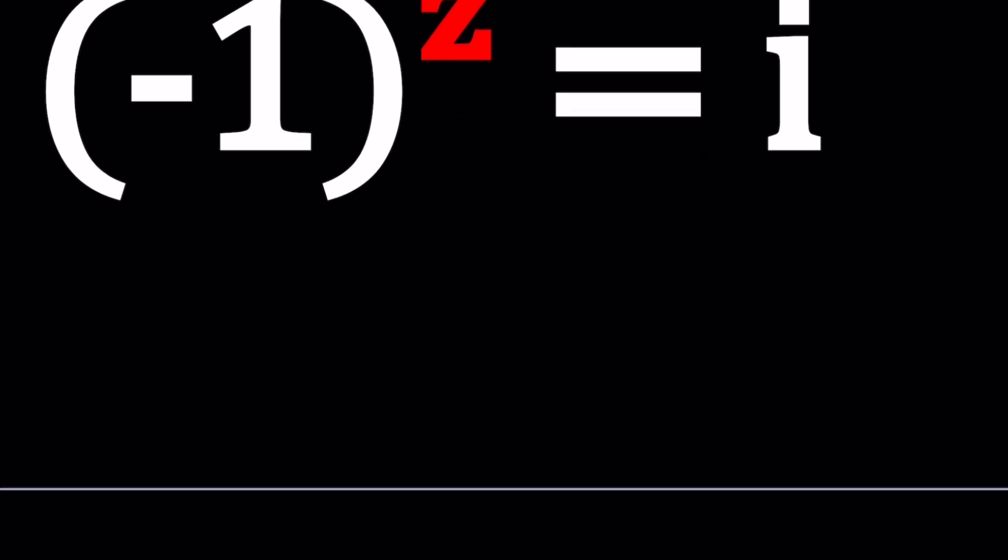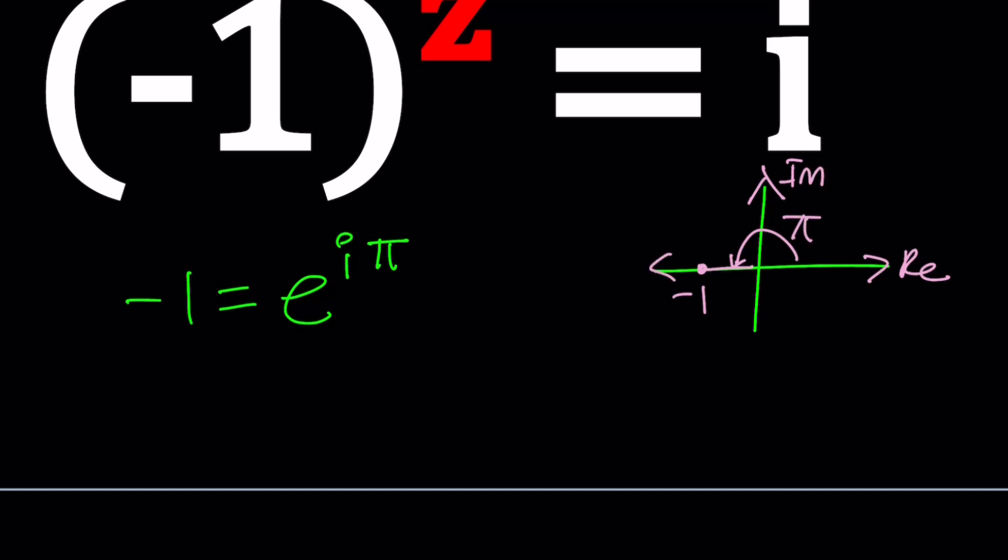First of all notice that negative 1 can be written as e to the power i pi. If you think about negative 1 in the Argand plane, which is kind of like a fancy word for the coordinate plane where we plot complex numbers as two-dimensional vectors, we can basically plot negative 1 here. It's going to be on the negative side of the real axis. This is the imaginary.